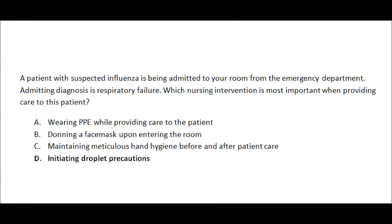Let's start eliminating. We have a patient with influenza, which per hospital protocol requires PPE, a face mask, and hand hygiene. But do you put a patient with influenza in droplet or airborne precautions? That's something people get confused on. Options A, B, and C are all correct — but if you remember that influenza requires droplet precautions, then droplet precautions would include wearing PPE, putting on a face mask, and washing your hands. So the answer is D, and you can see how tricky that is — it requires critical thinking and knowing the information.